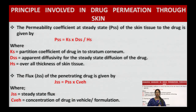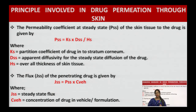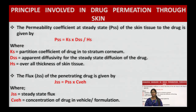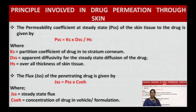So DQ/DT is directly proportional to DKA — if the diffusion coefficient, partition coefficient, and surface area are high, the rate of diffusion will be high; if the skin membrane thickness is greater, the diffusion rate will decrease. The permeability coefficient PSS equals KS × DSS / H — so the permeability coefficient is directly proportional to partition coefficient and apparent diffusibility, and inversely proportional to thickness of skin tissue. Flux JSS equals PSS × CVH — at steady-state condition, flux is directly proportional to the drug's partition coefficient, apparent diffusibility, and the concentration of drug in the vehicle/formulation.